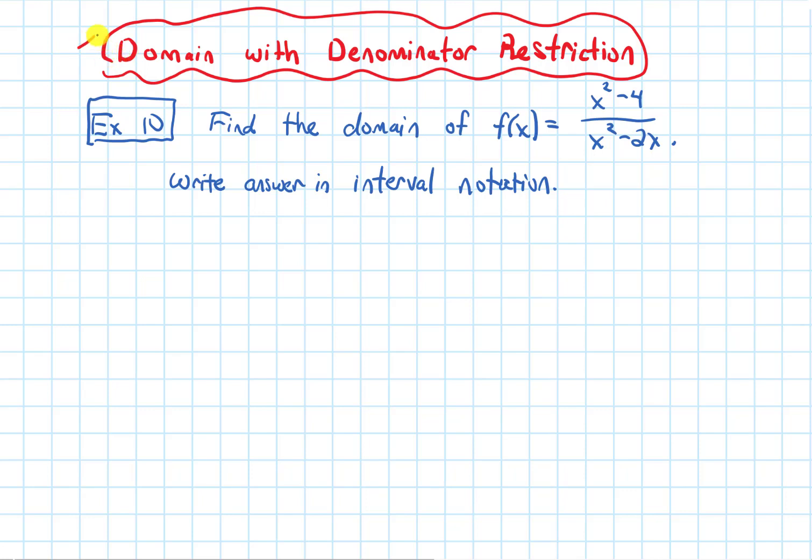In this video, we'll do an example in which we find the domain of a function that has a denominator restriction. The example says to find the domain of f of x equals x squared minus 4 over x squared minus 2x, and to write our answer in interval notation.